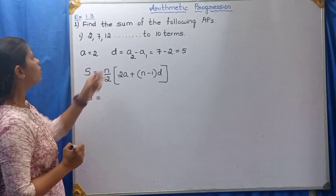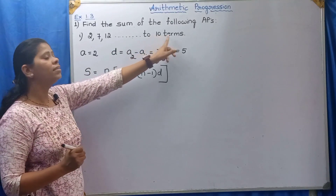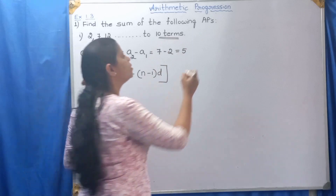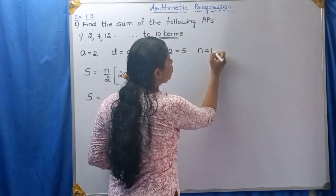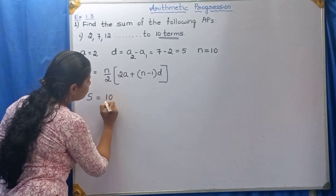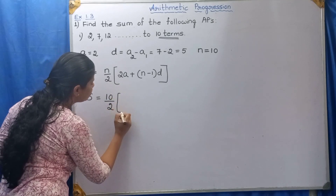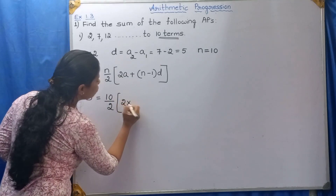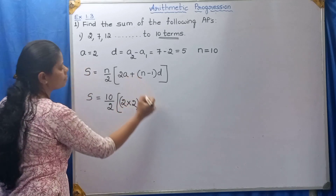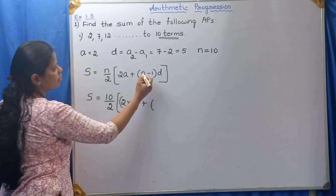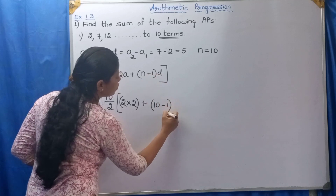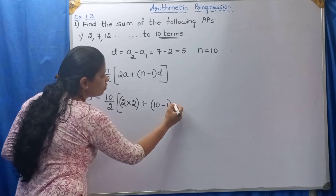S is equal to — find the sum to 10 terms, so n equals 10. Substituting: 10 by 2, bracket, 2 into A — the value of A is 2, so 2 into 2 — plus bracket n, the value of n is 10, so 10 minus 1, into D, the value of D is 5.